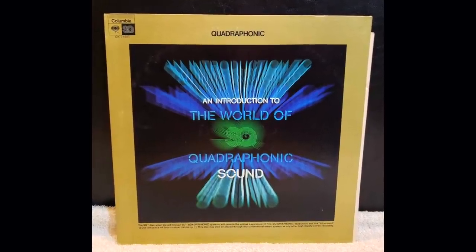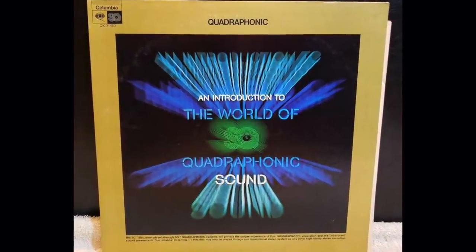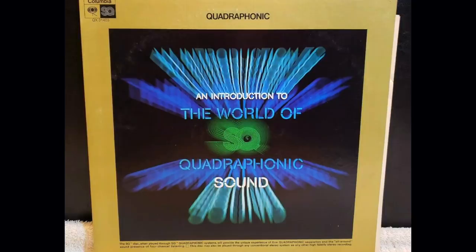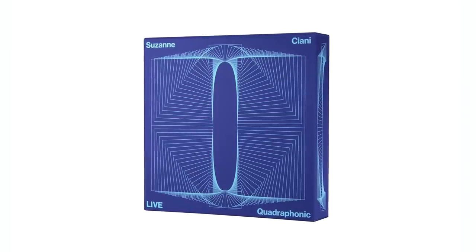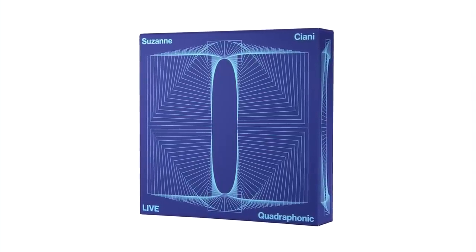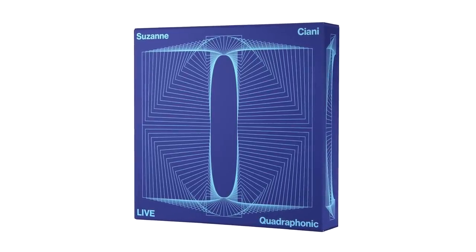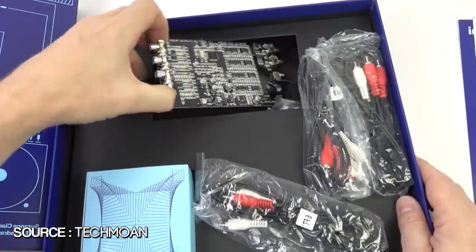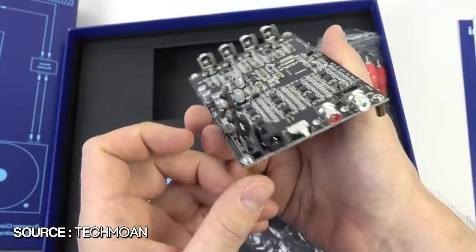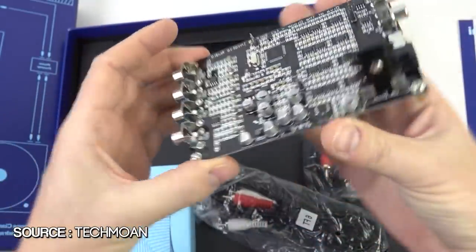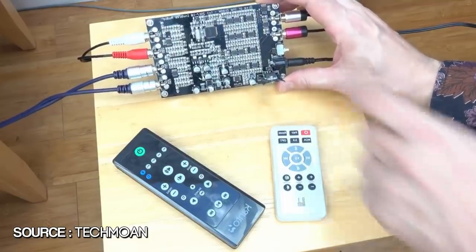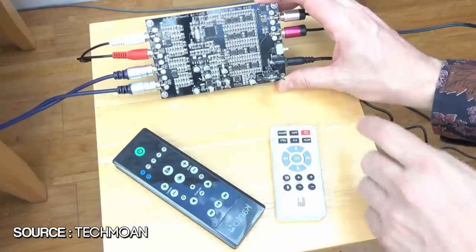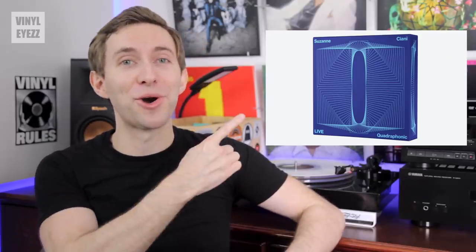As a side note, there's also a compilation record called An Introduction to the World of Quadraphonic Sound, which has a very trippy cover. Overall, there hadn't been a new record pressed on this format in over 30 years — until this one from Suzanne Ciani. This is her album Live Quadraphonic, released on 180-gram quadraphonic vinyl on June 4th, 2018. The record spins at 45 rpm, plays for a total of 30 minutes, and inside the box it even includes the decoder that will work with your vinyl setup. However, it doesn't include those two extra speakers, so you have to buy those on your own. Tecmoan did a great video unboxing this record, explaining it, and testing everything out — you can hit the card to see his video.